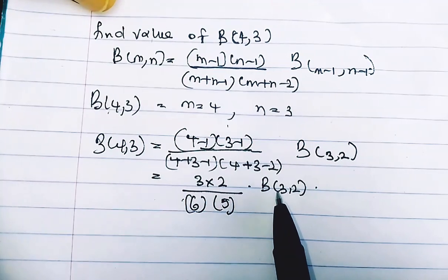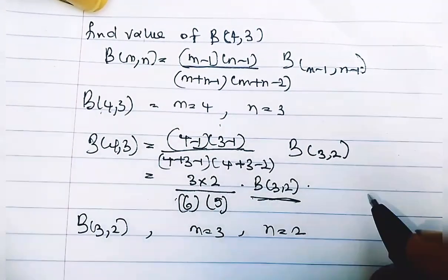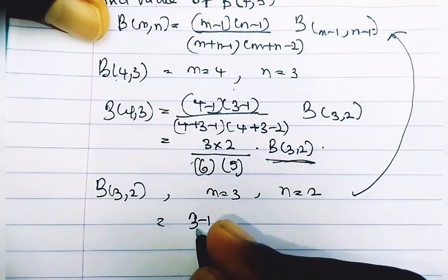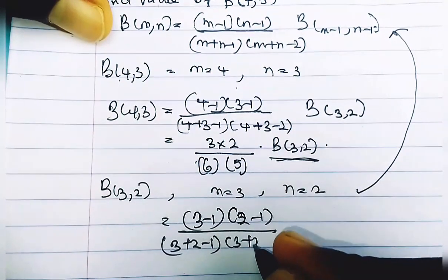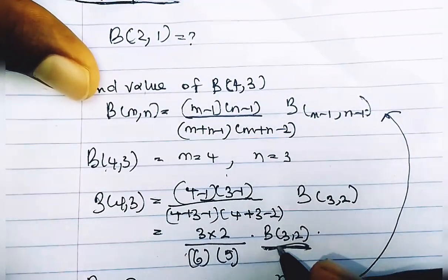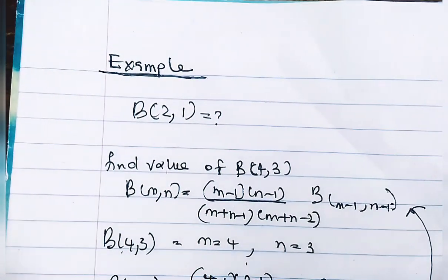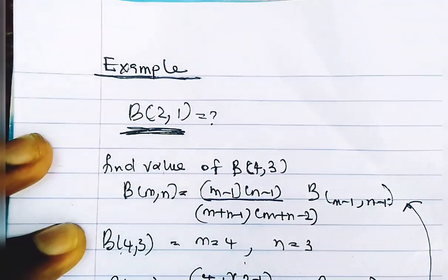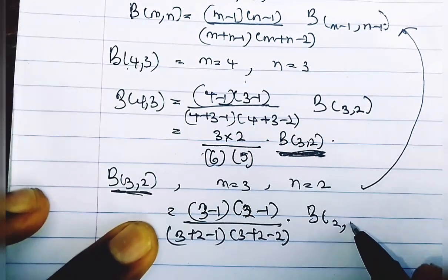We now have another Beta function, B(3, 2). So taking this one as well: m is 3 and n is 2. Substituting back into the formula gives (3−1)(2−1) / [(3+2−1)(3+2−2)] · B(m−1, n−1). We keep solving — like with the Gamma function — until we reach Beta of 2 and 1. That is why we need the value of this constant. Here, 3−1 = 2 and 2−1 = 1, so we stop.